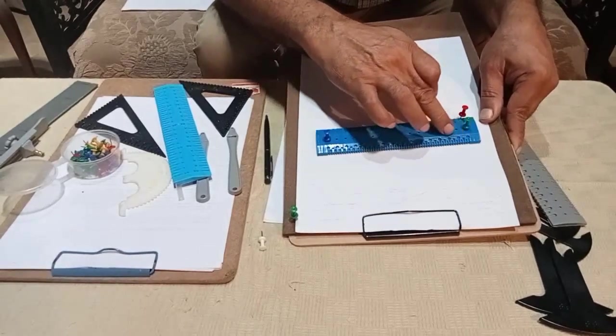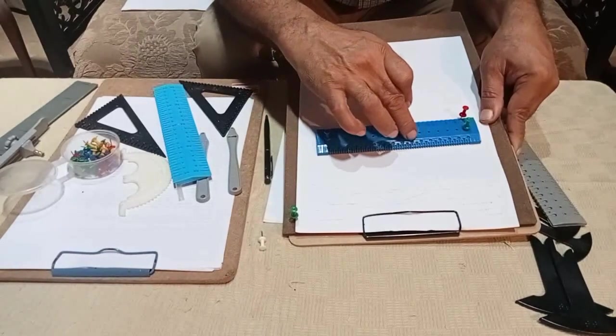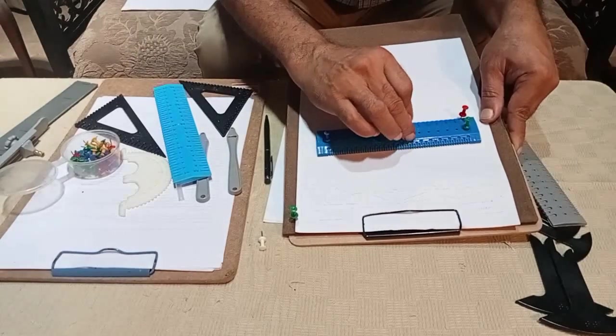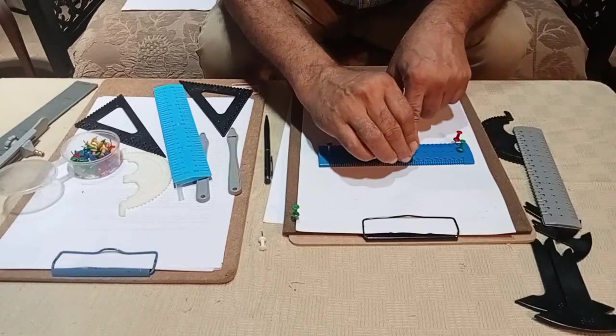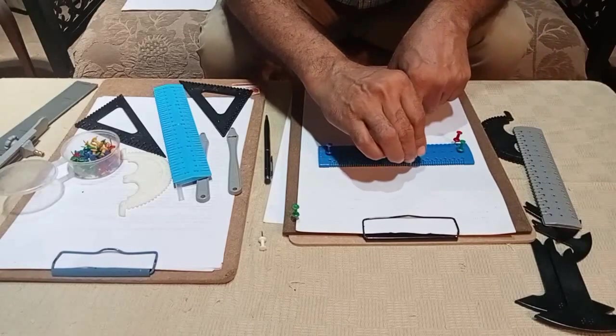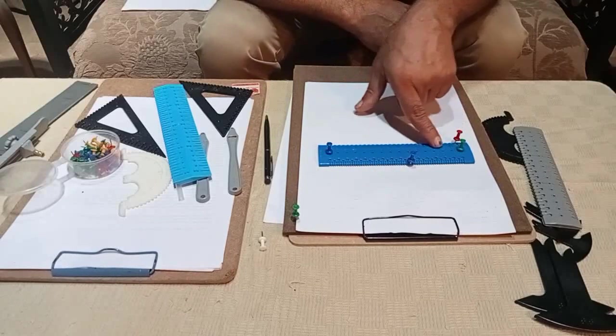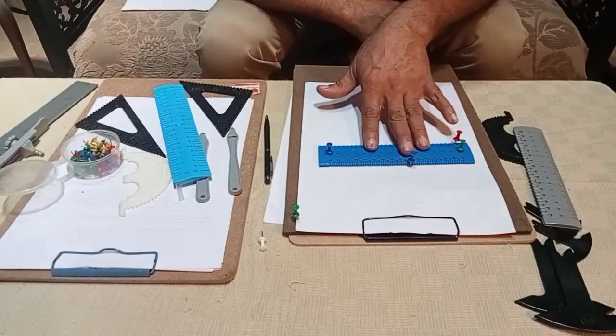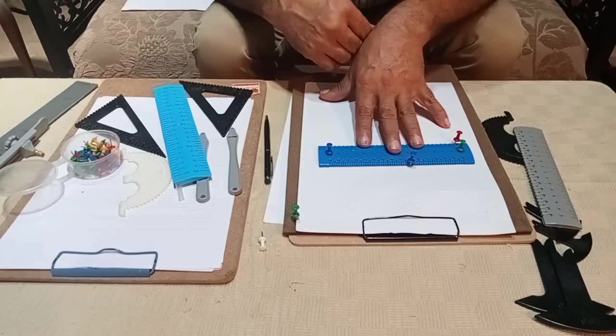You also have tactile markings at every 10 millimeters to help you easily locate a groove. You can feel and locate the groove, then slide the pin off the edge to where you want your measurements. You have tactile markings as well as the grooves themselves, which serve as locators for thumbtacks, pins, or the stylus.